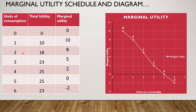We go through 1, 2, 3, 4, 5, 6 units of consumption. The total utility derived from each respectively is 10, 18, 23, 25, 25, and 23. Marginal utility is the difference between total utility at one level and total utility at the previous level. You can express this as a formula: MU = TU_N minus TU_(N-1). For example, MU at the second unit is TU2 minus TU1, which is 18 minus 10, equaling 8. Similarly, we find the values for the rest of the table.